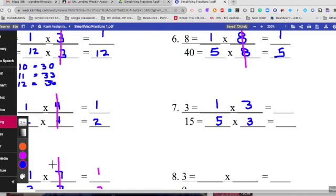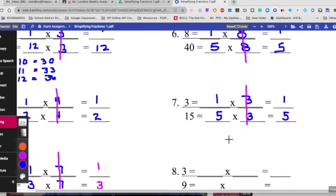Now, we'll go over here and cancel out the 3s, and that leaves you again with 1 fifth, 1 over 5. So, Cubs, we only have 1 more to go.